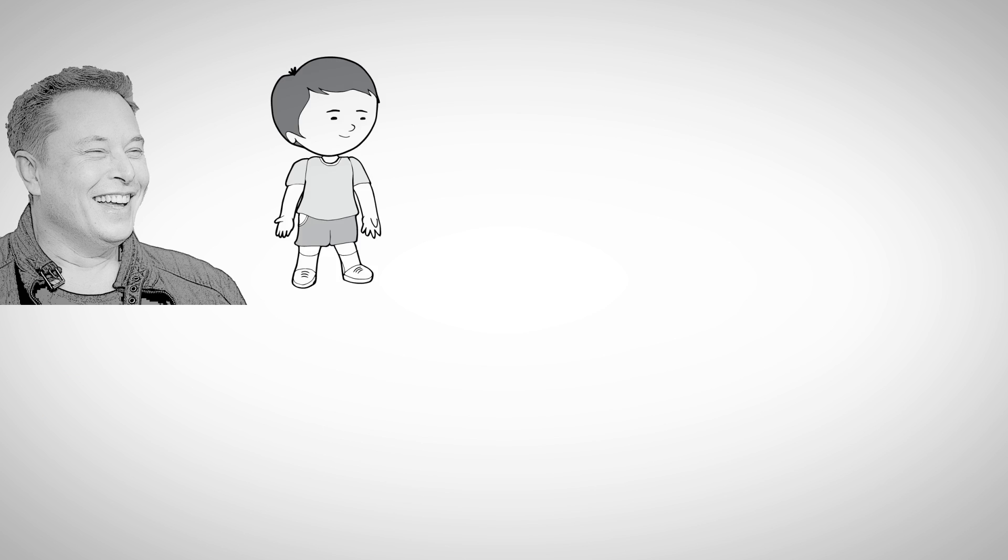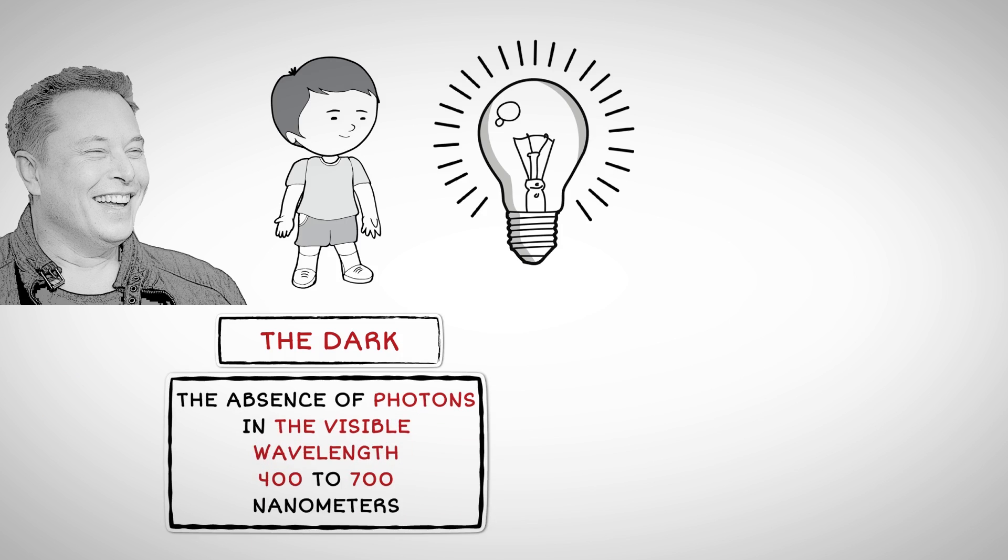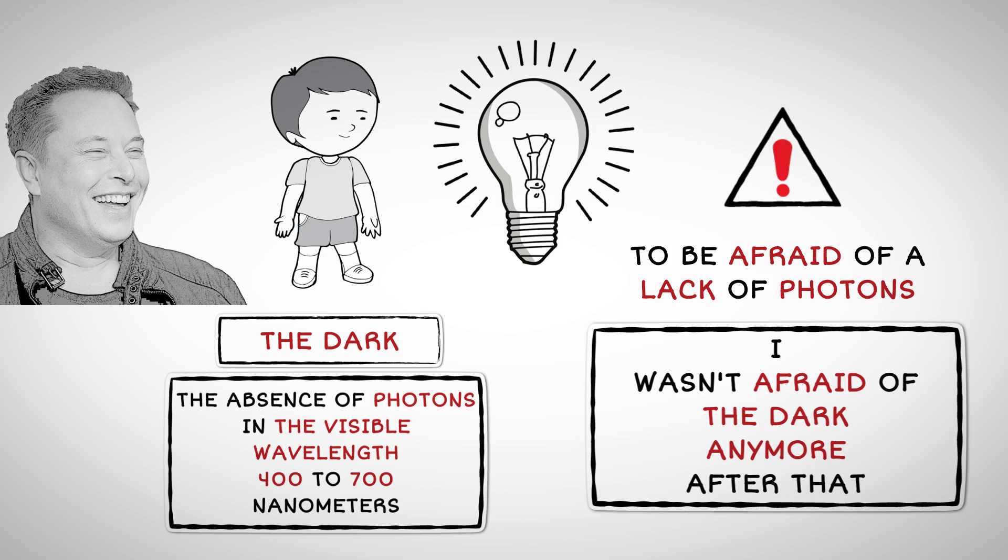When I was a little kid, I was really scared of the dark. But then I came to understand dark just means the absence of photons in the visible wavelength, 400 to 700 nanometers. Then I thought, well, it's really silly to be afraid of the lack of photons. Then I wasn't afraid of the dark anymore after that.